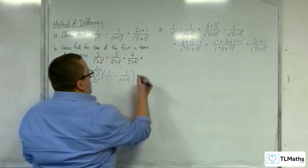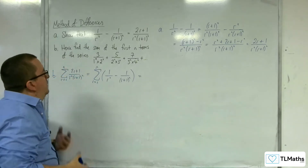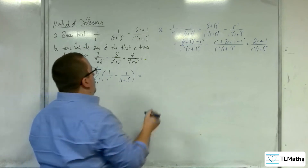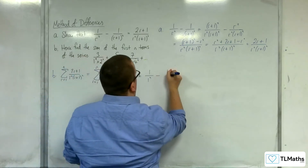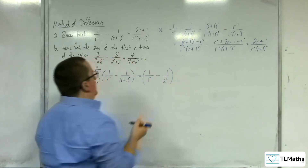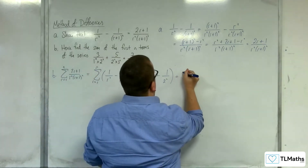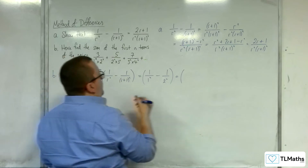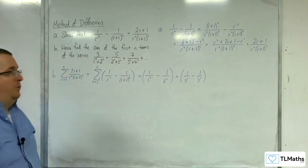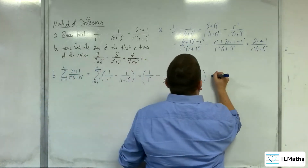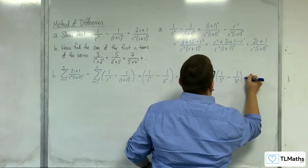So what we can now do is start substituting in values: r equals 1, r equals 2, r equals 3. For r equals 1 we get 1 over 1 squared take away 1 over 2 squared. For r equals 2 we get 1 over 2 squared take away 1 over 3 squared. For r equals 3 we get 1 over 3 squared take away 1 over 4 squared, and so on.